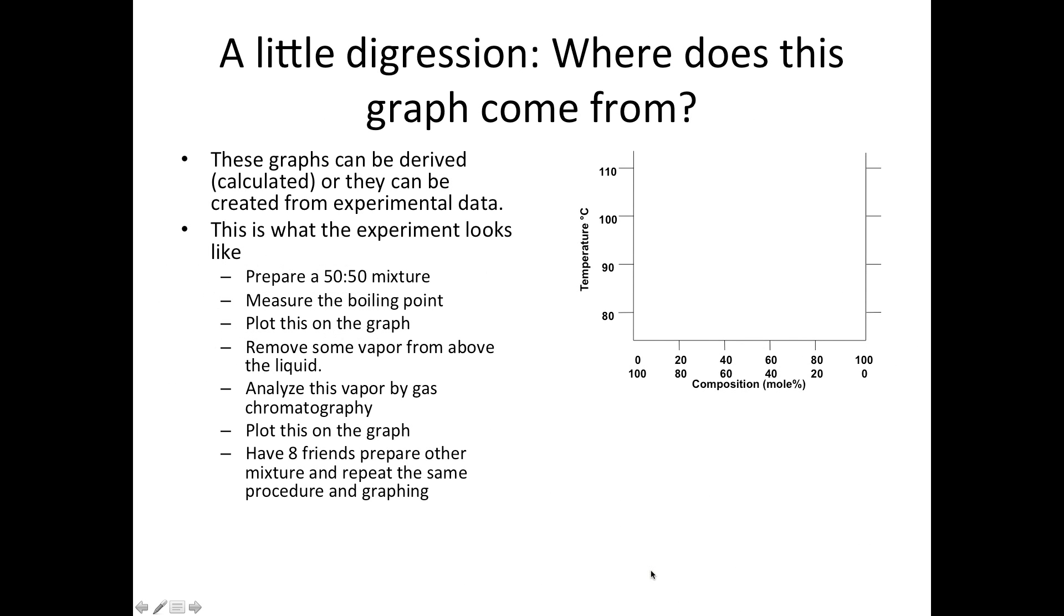Now a little digression. These slides aren't in the lab manual, but I want you to know where these graphs come from. They can be derived or calculated, or they can be created from experimental data. Here is what that experiment looks like. First, you prepare a 50-50 mixture, and then measure its boiling point. This is exactly as you did in lab, measuring the boiling point by refluxing in a test tube, and you measure the temperature. So you plot that point. You measured it at 92 degrees boiling, so it's plotted up here on the graph.